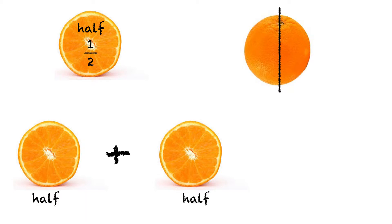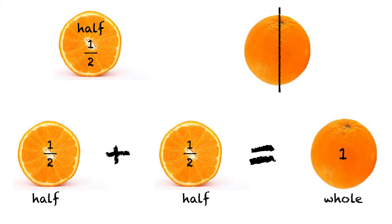Half an orange and half an orange makes a whole orange. Half plus half equals one.